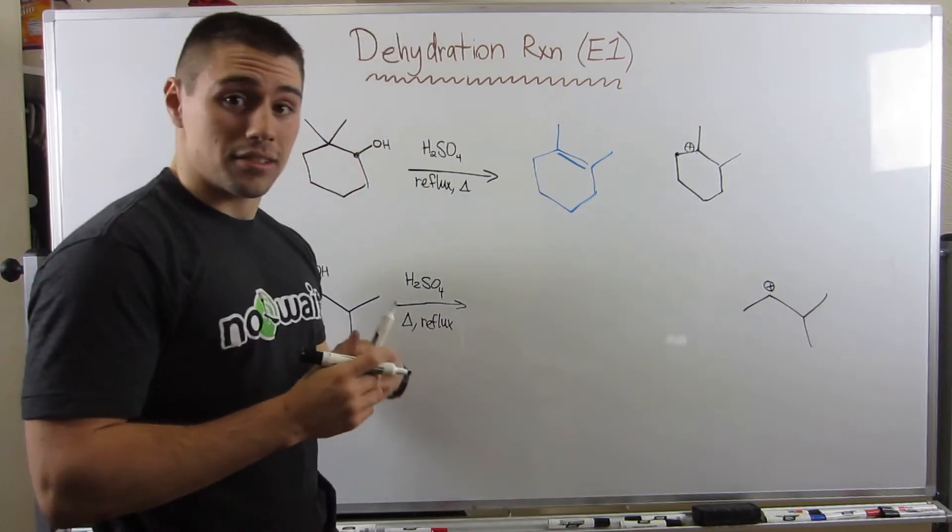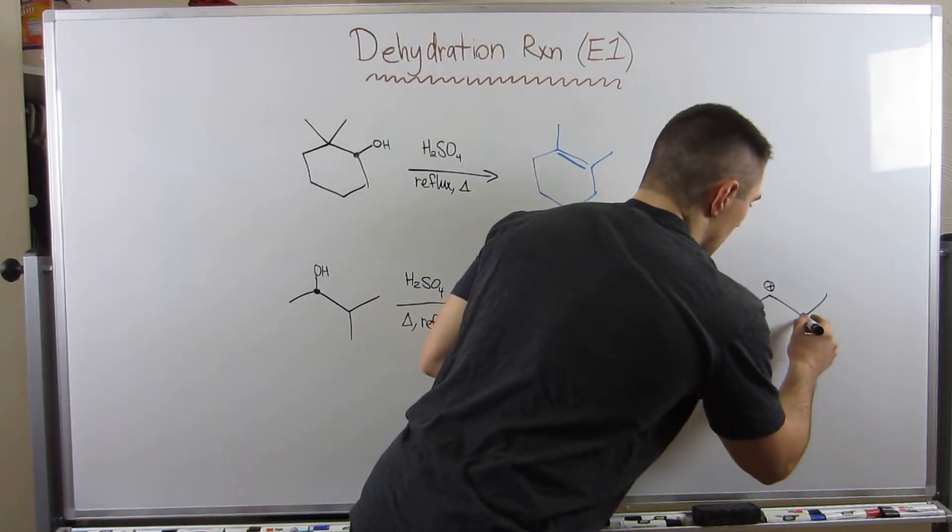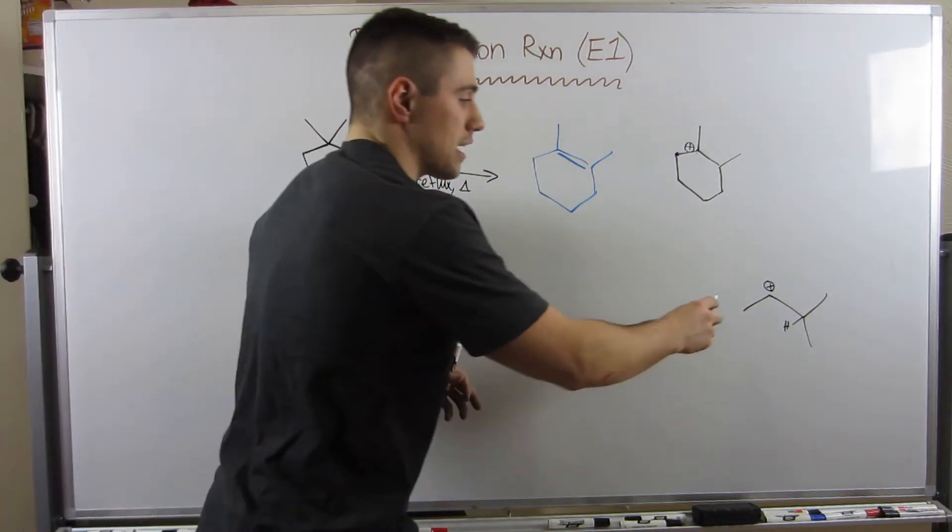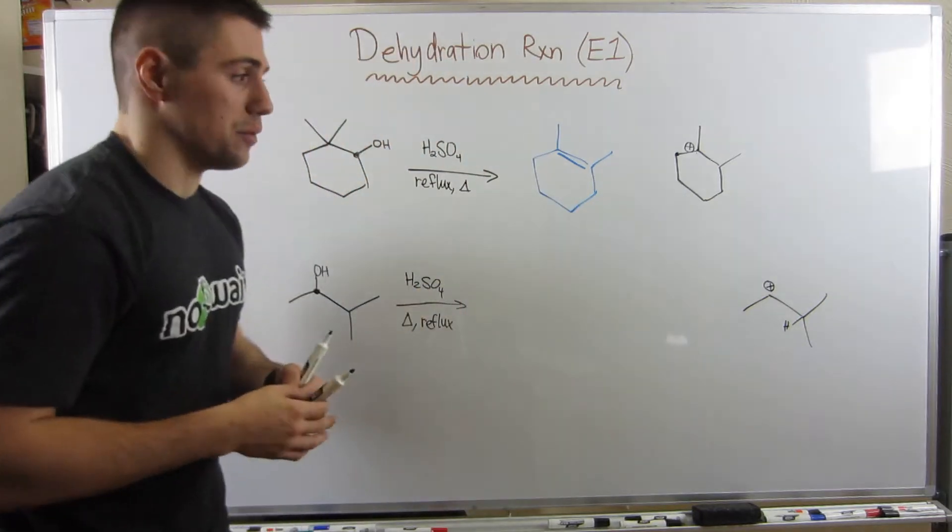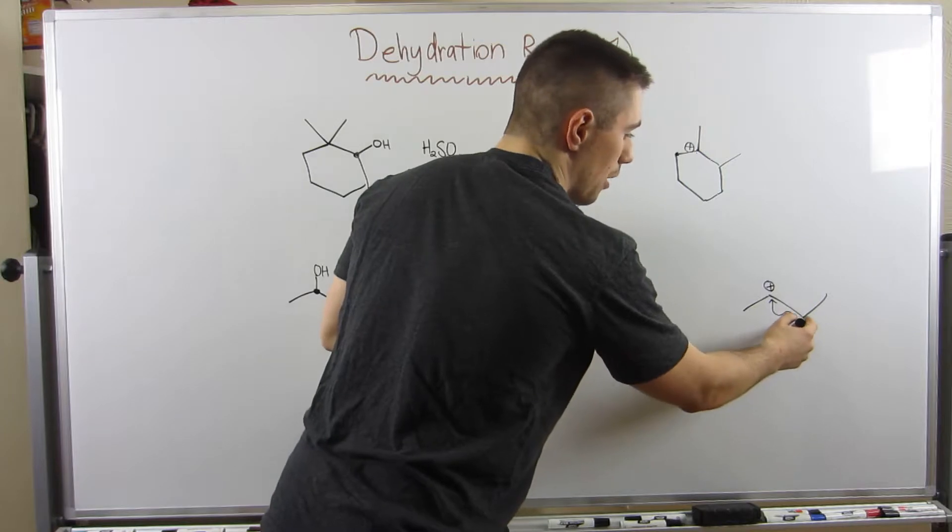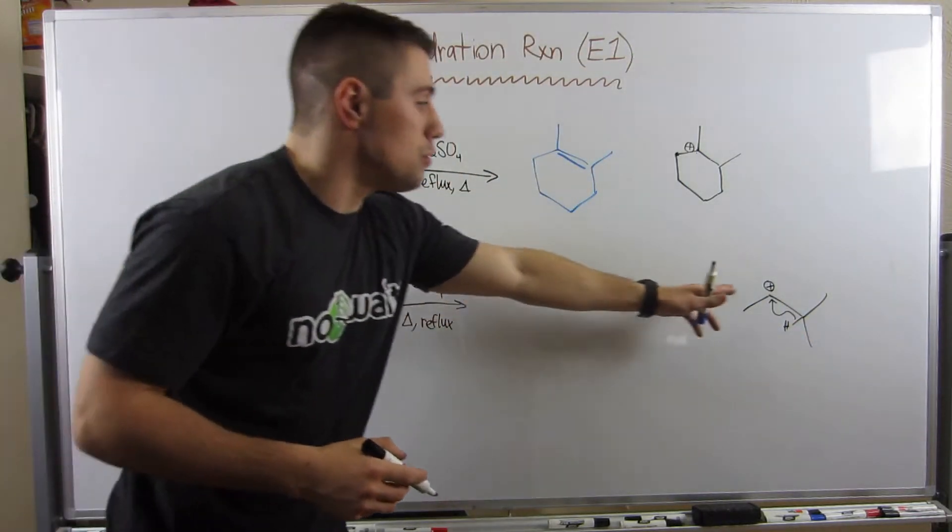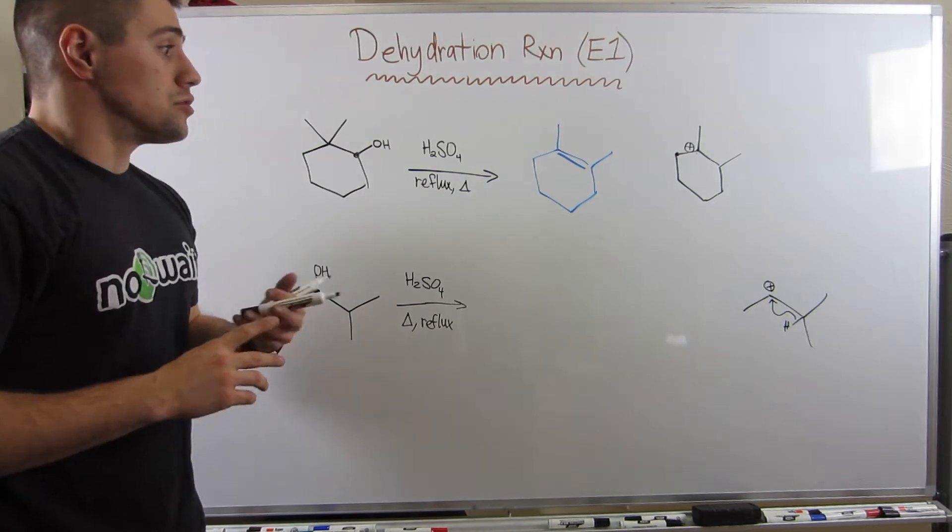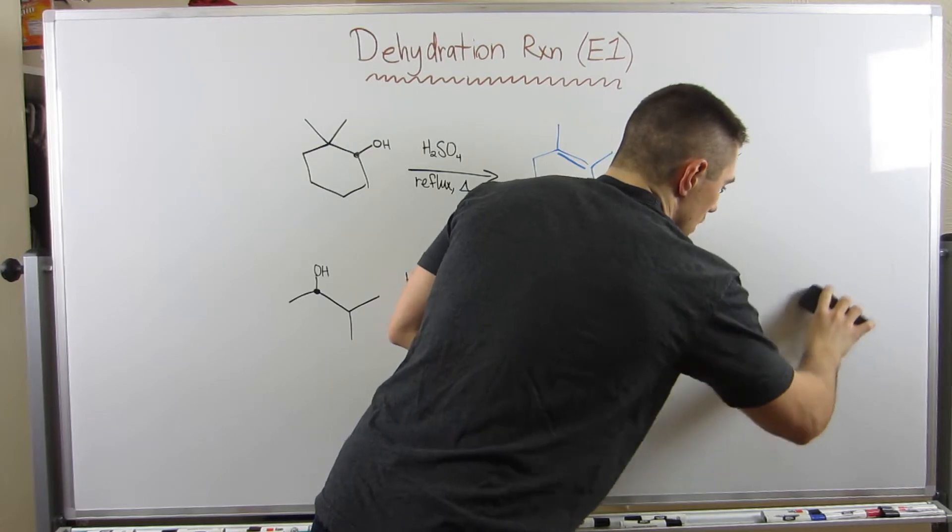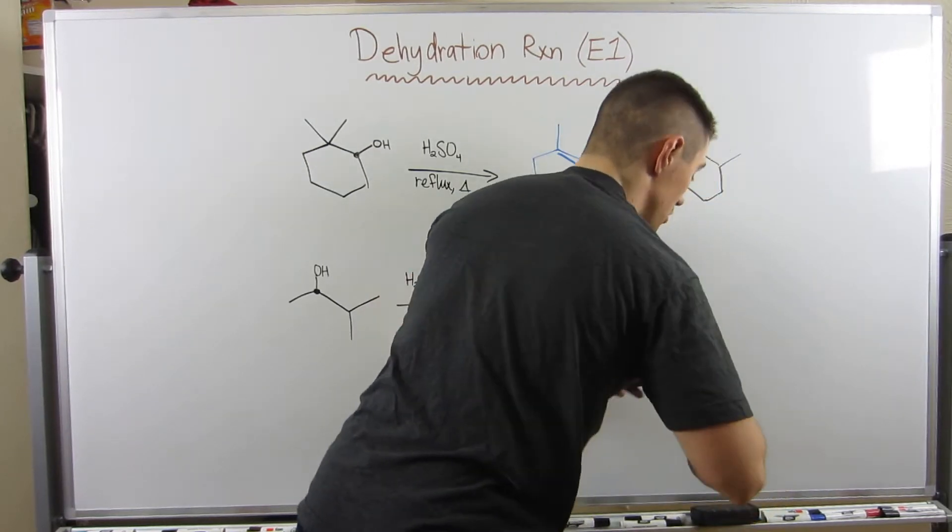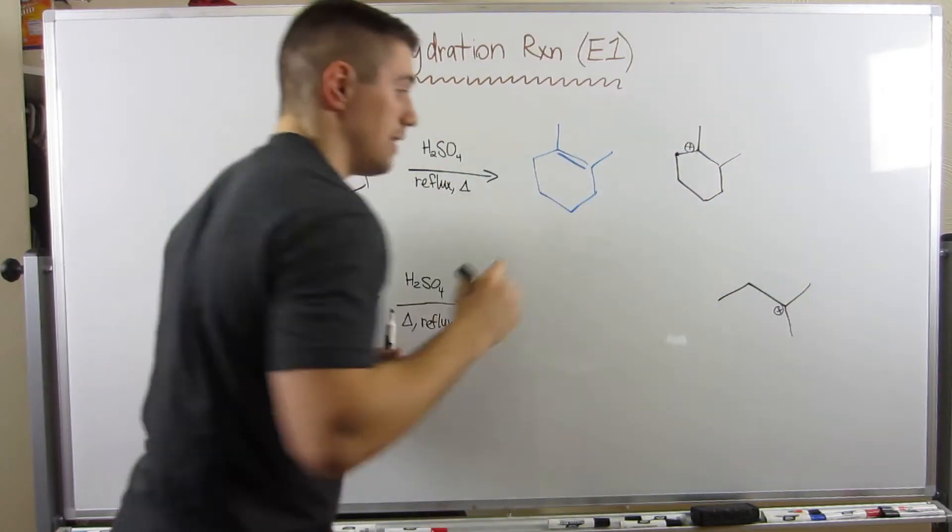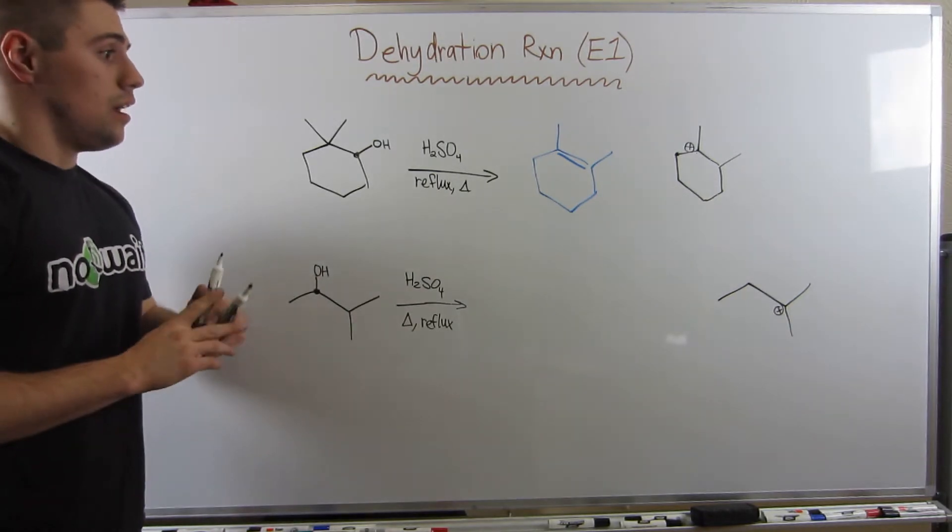So let's draw the immediate carbocation formed right there. Can we make it better? Look to the left. Nope. That's a primary position. That wouldn't make it better. Baha, to the right. Yes. That is a tertiary position, and we see there is a hydrogen, a hydride. We can easily shift to make this secondary carbocation move to being a tertiary one. So let's do that. Draw my arrow, moving both the electrons in the bond and the hydrogen to this position.